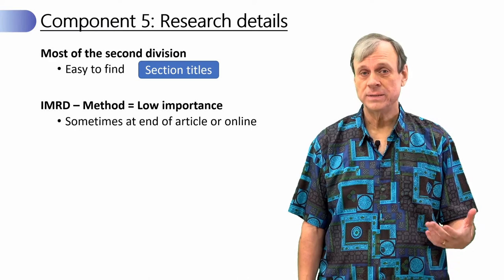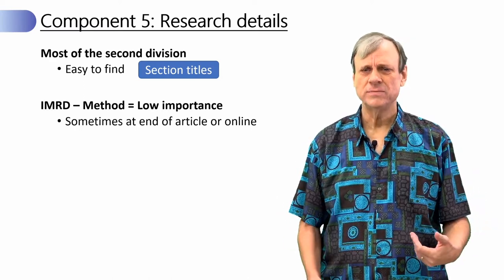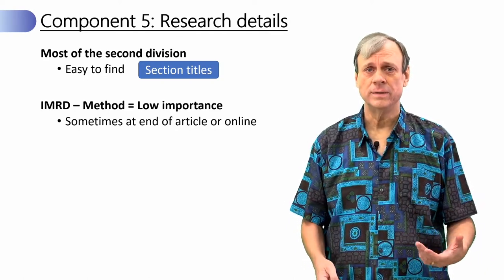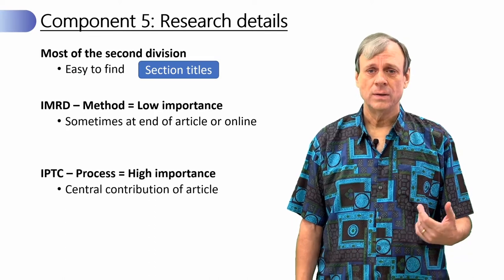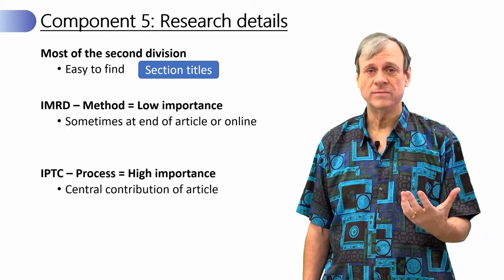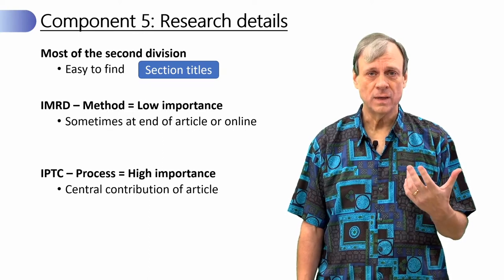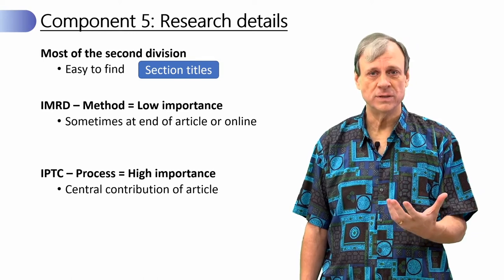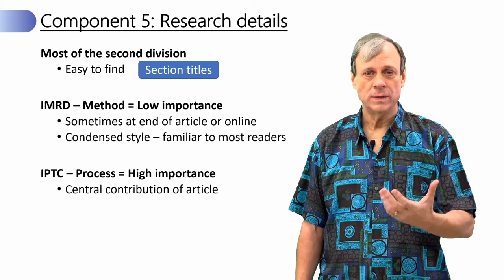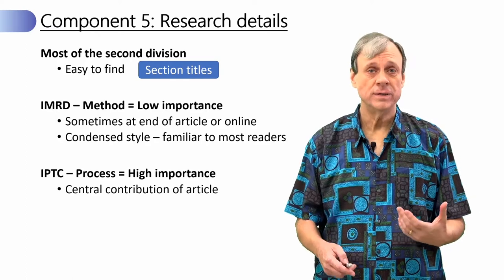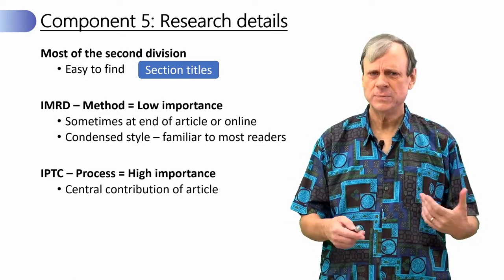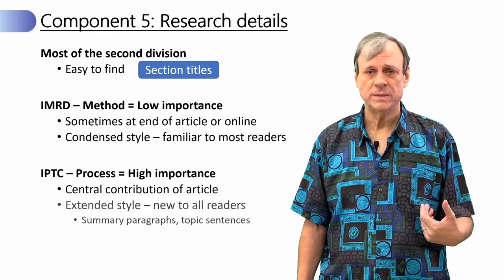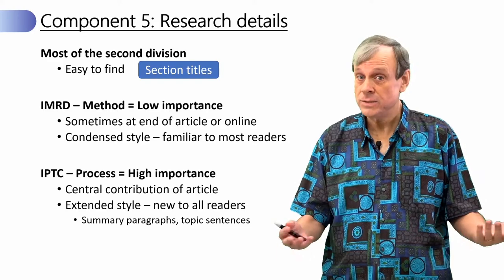In IMRD, the methods division is relatively low importance and is often found at the end of the article, or even online in certain journals. On the other hand, this is the most important part of the IPTC model — the central contribution — and makes up most of the paper. In IMRD it's often written in a very condensed style because the material is already familiar, whereas in IPTC it's written in an extended style because it's new for everybody.